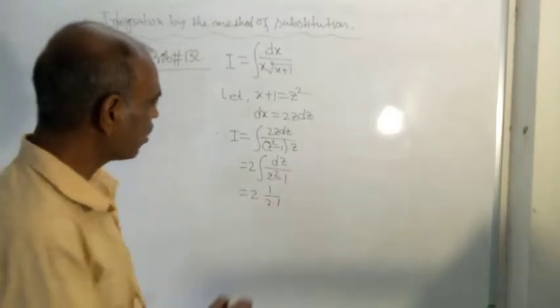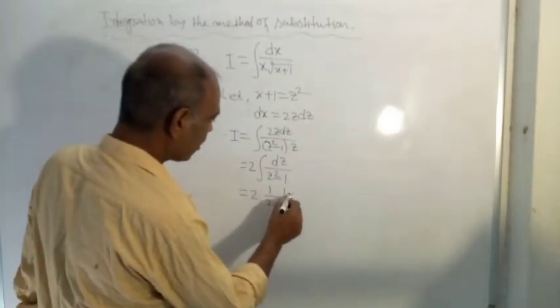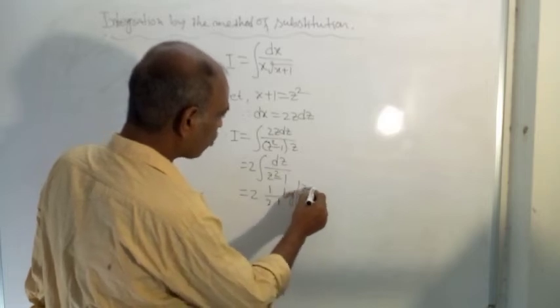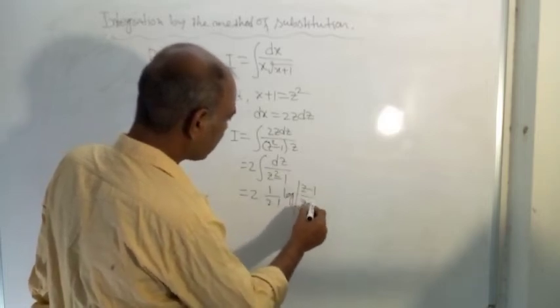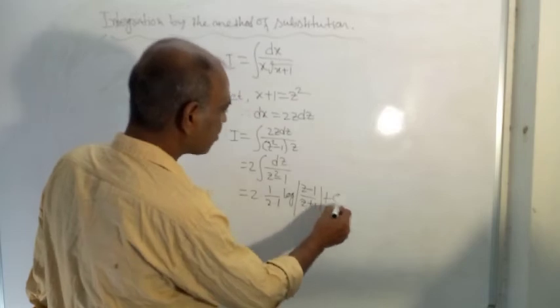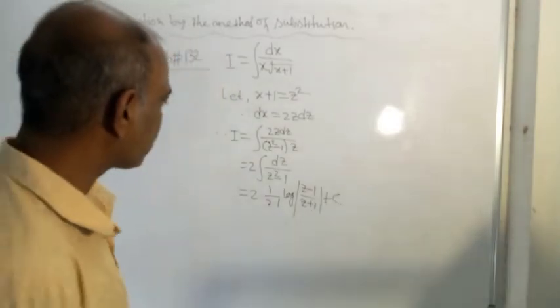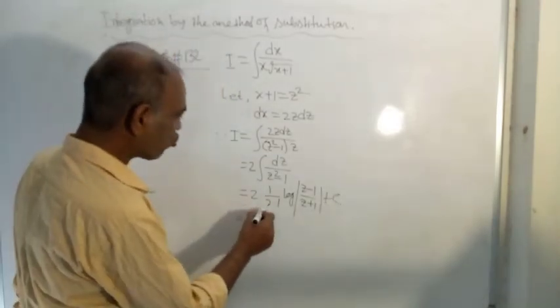It equals 2 times 1 by 2 times log of mod (z minus 1) by (z plus 1) plus c, where c is the constant of integration. These 2 and these 2 are cancelled.